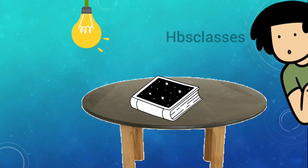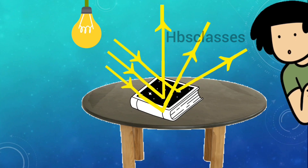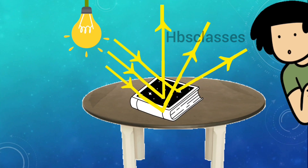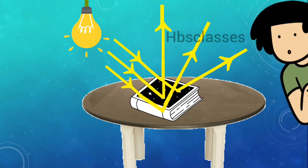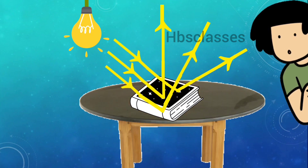The surface of the book, being rough, scatters the incident light in all parts of a room, and hence the book can be seen from all parts of the room.